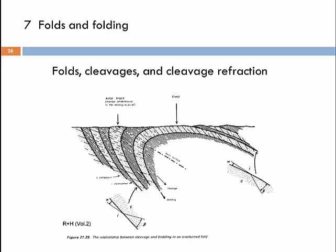On the overturned limb, cleavage refraction happens in the opposite direction — away from the actual surface and into a direction more perpendicular to the layer boundaries, though not entirely perpendicular on the limbs. In the hinge zone, however, we have a cleavage orientation that is perpendicular to the layer boundaries, and that applies to both competent and less competent layers.